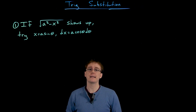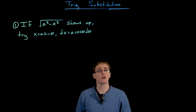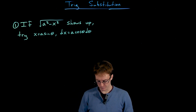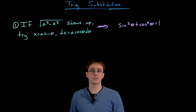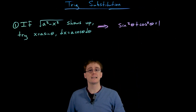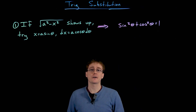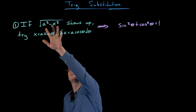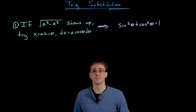We set x equal to a times sine of theta, and that causes the differential of x to be equal to a times cosine of theta d theta. The way we discovered this trig substitution was by working with the trig identity sine squared plus cosine squared equals one. We manipulated this Pythagorean identity so that our expression showed up and informed us how to make these substitutions.